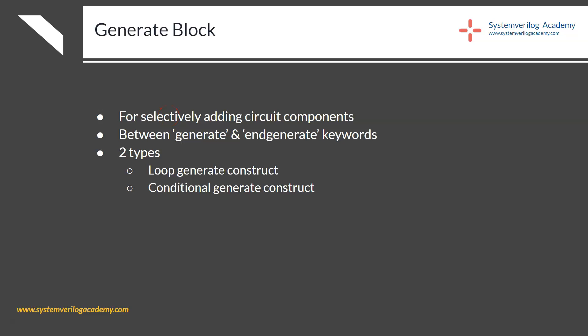The generate block was originally available in Verilog, and therefore it is also available in SystemVerilog. It is widely used in RTL coding to selectively add circuit components based on some condition. The code you want to generate must be placed between the keywords generate and endgenerate. There are two types of generate statements: looping generate constructs and conditional generate constructs.